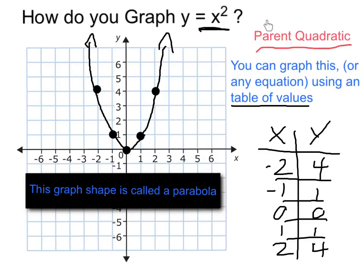And part of the reason it's called the parent is because this is sort of the standard, the basic type of parabola, after which all the others are different types of transformations.